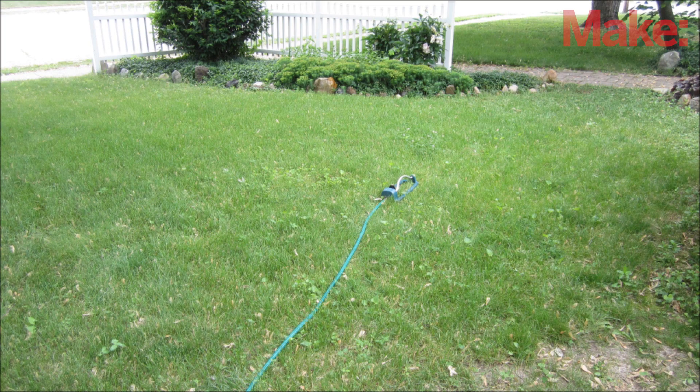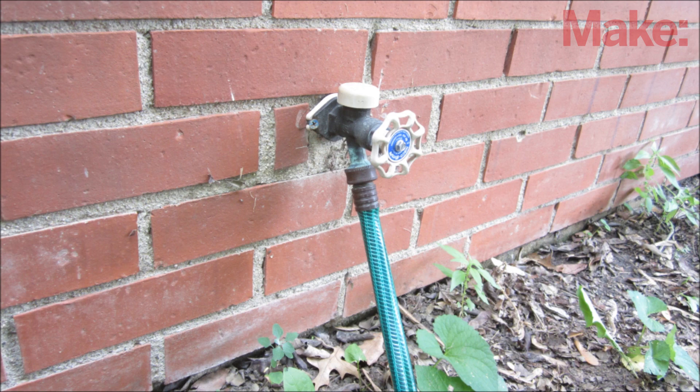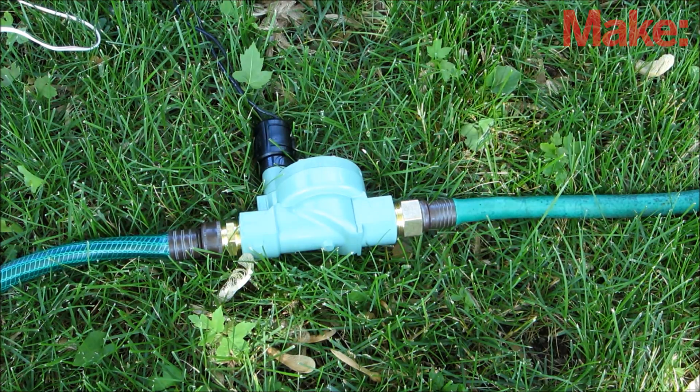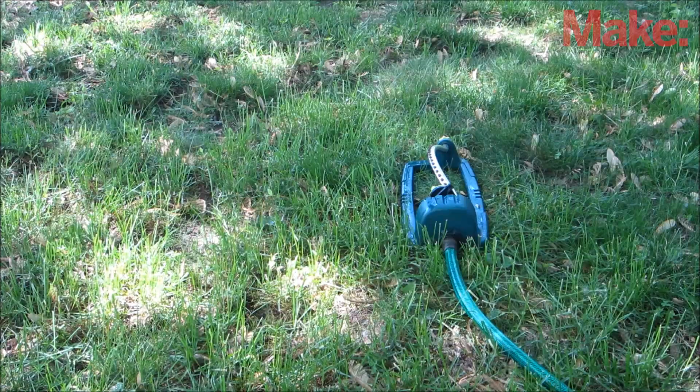Now you're ready to set up the system in your yard. Connect one hose between the faucet and the sprinkler valve, and connect a second hose between the sprinkler valve and your sprinkler.